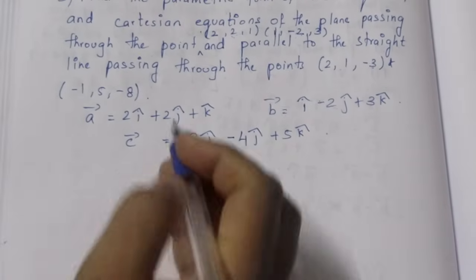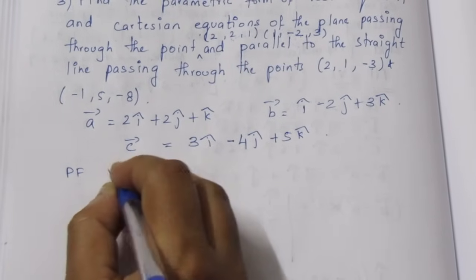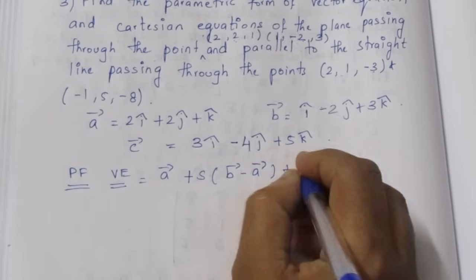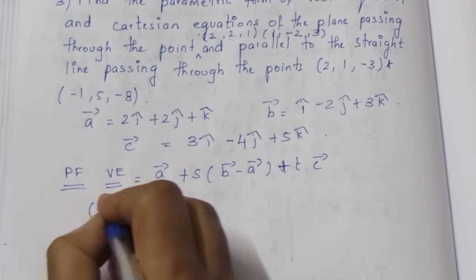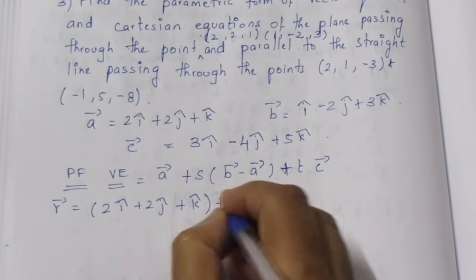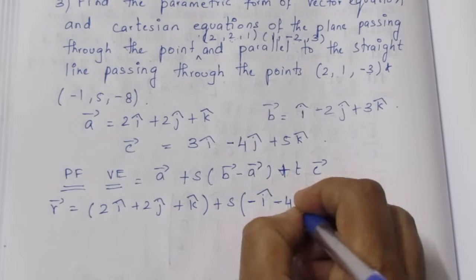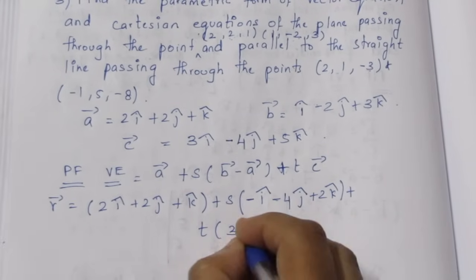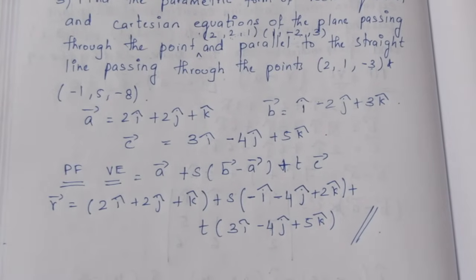Now we have A, B, C — two points and one parallel vector. The parametric form of the vector equation is: r vector equals A vector plus S times (B vector minus A vector) plus T times C vector. So B minus A gives us: A vector is 2i cap plus 2j cap plus k cap, plus S(B minus A) which includes minus 4j cap plus 2k cap, plus T times C vector: 3i cap minus 4j cap plus 5k cap. This is the parametric form of the vector equation.